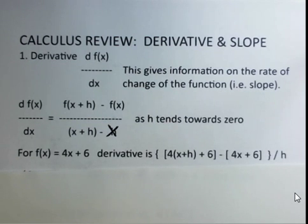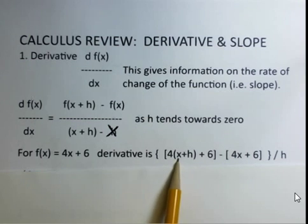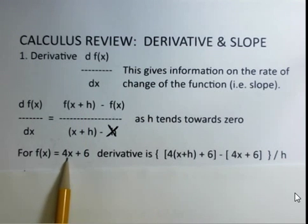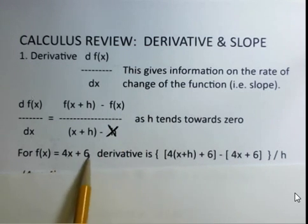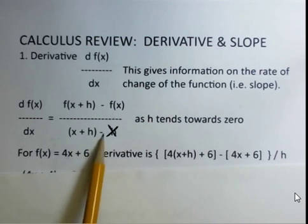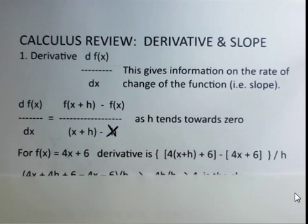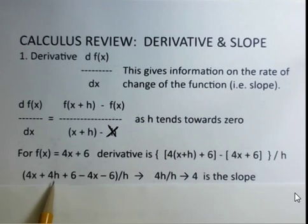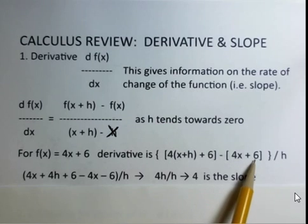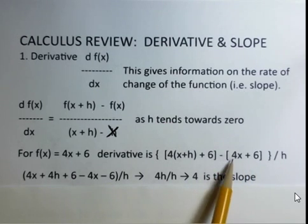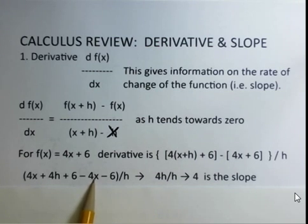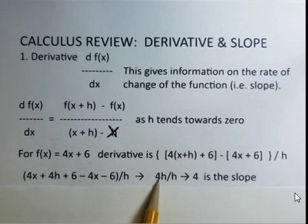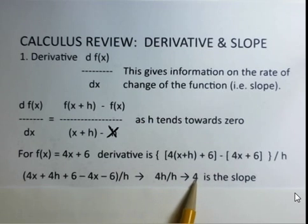If we have a linear function f of x equals 4x plus 6, how would we find the derivative? We put in x plus h to replace x. That's 4 times the quantity x plus h, we still have the 6, then subtract f of x which is 4x plus 6, all over h. Distributing the 4 gives 4x plus 4h plus 6, then distributing the minus sign gives minus 4x minus 6. The 4x and minus 4x cancel, the 6 and minus 6 cancel, leaving 4h over h. The h's cancel and we get 4 for the slope.